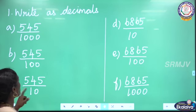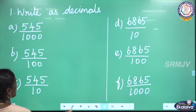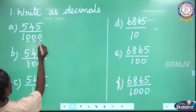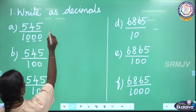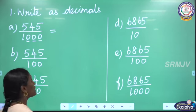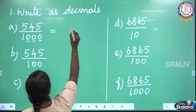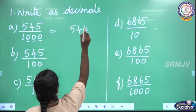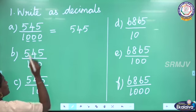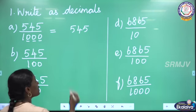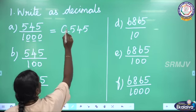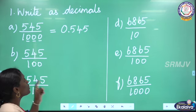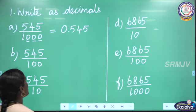See the first fraction: 545 divided by 1000. According to the number of zeros in the denominator, we need that many decimal places in the answer. Here the denominator is 1000, so we need 3 decimal places. Writing the number as it is: 545. From the last, before 3 digits, we keep the decimal point. The whole number part is 0, so 0.545 is the required decimal number.